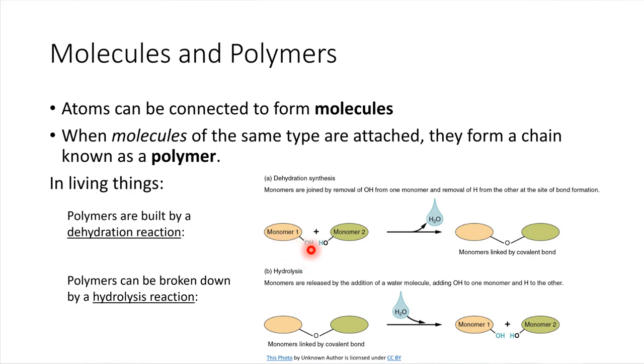So on this monomer, we have an OH group, oxygen and hydrogen. On this monomer, we have a hydrogen. And what will happen is those atoms, they are going to leave, they'll split off and leave, and form a water molecule. Water is H2O, two hydrogens and an oxygen. So we've just dehydrated the system. This is why it's called a dehydration reaction. What we're left with is that one little oxygen, and that oxygen is going to form the bridge between these two monomers.